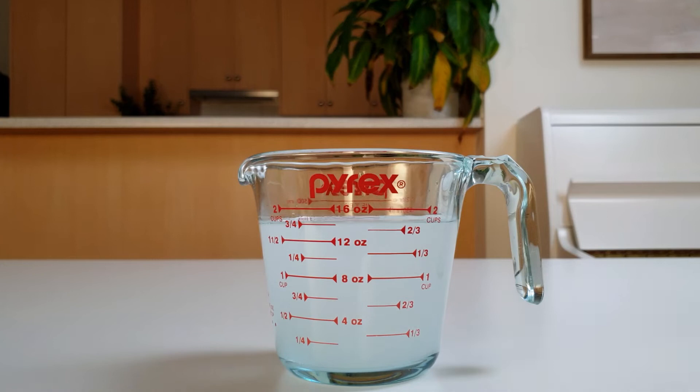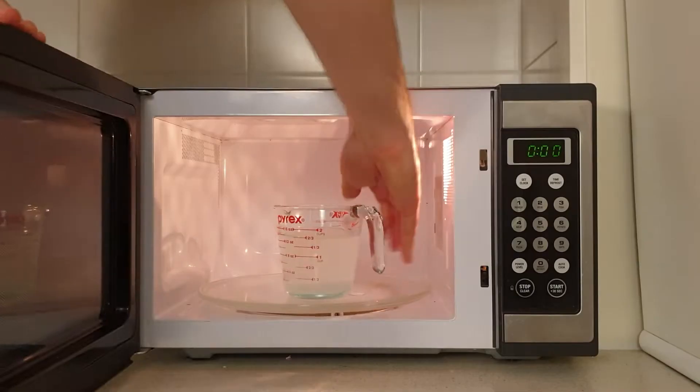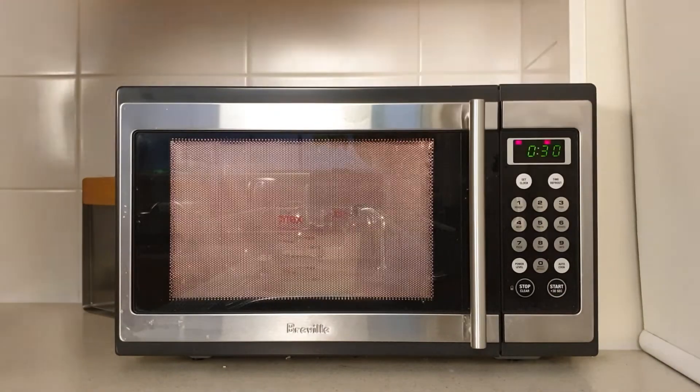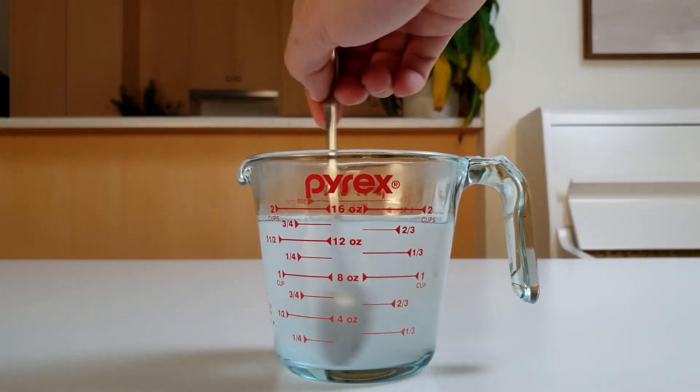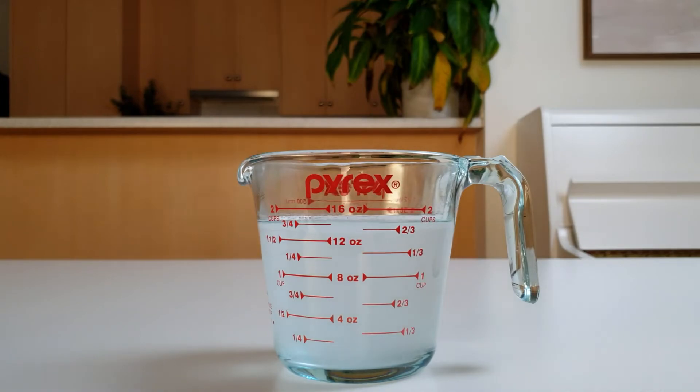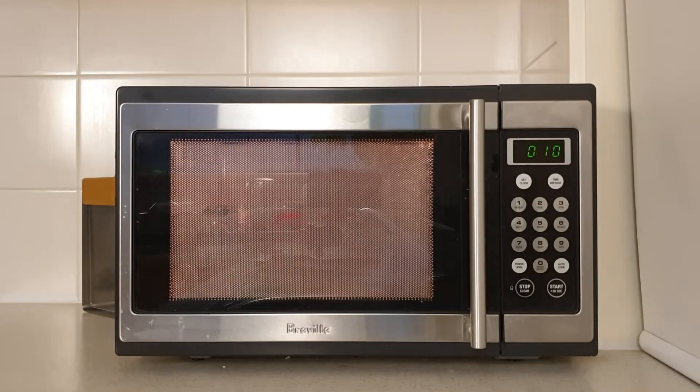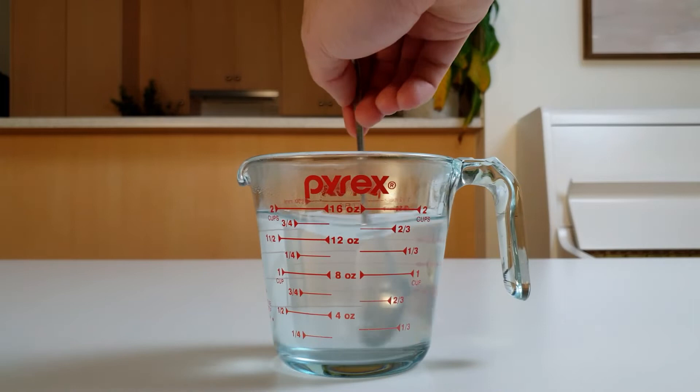After two minutes, there might still be some undissolved Epsom salt. In this case, microwave the jug on high for 30 seconds, and stir for another two minutes. If there's still undissolved salt, repeat both of these steps again. Heating the water helps more salt to dissolve.